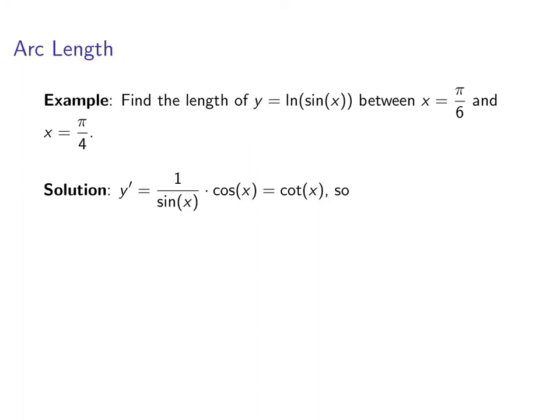Okay, so the first thing we always need to do is take a derivative. So the derivative of log of sine x is 1 over sine x times the derivative of the inside, and that derivative will be cosine. So cosine over sine is cotangent.